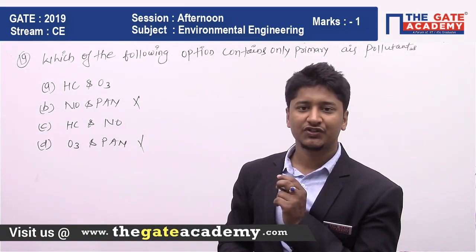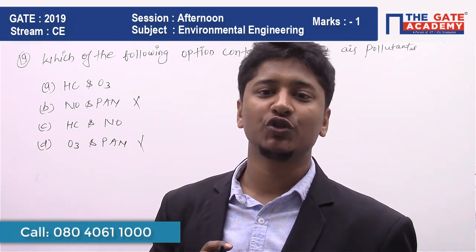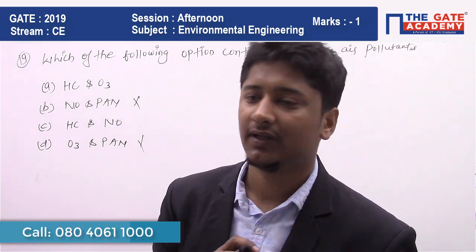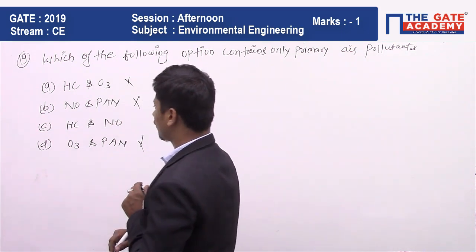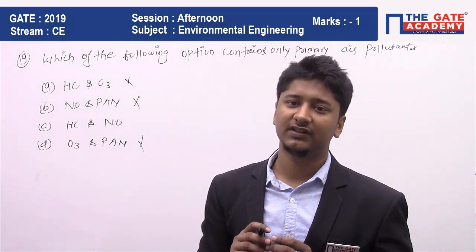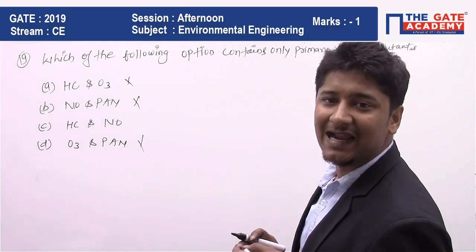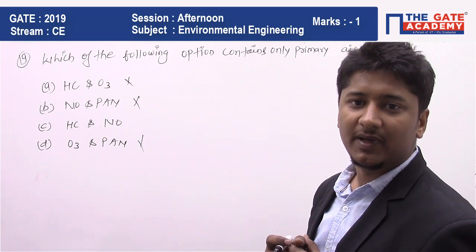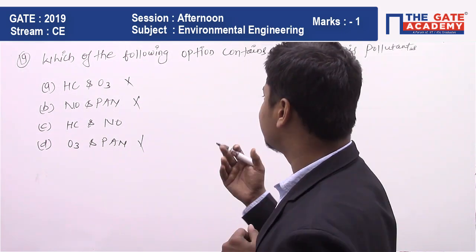Now looking at option A: it contains O3 (ozone), which is not a primary pollutant — it is a secondary pollutant. So option A is also wrong. The only option left is C, which contains hydrocarbon (HC) and NO, and yes, both of these are primary pollutants. So the correct answer is option C.